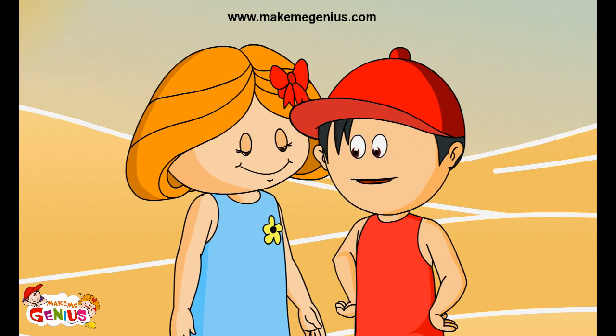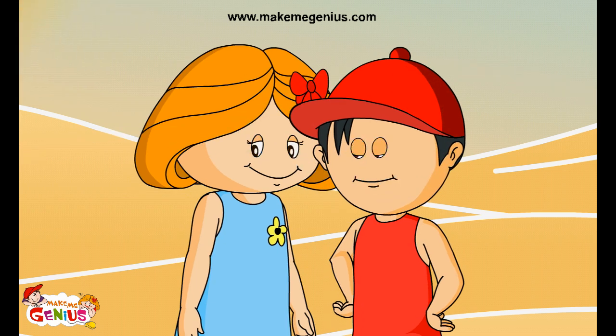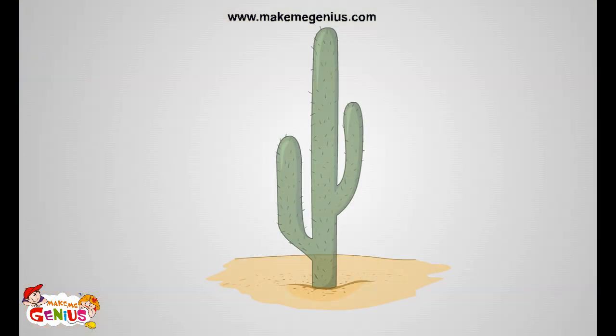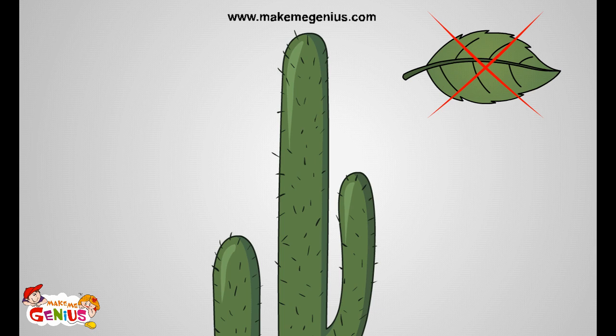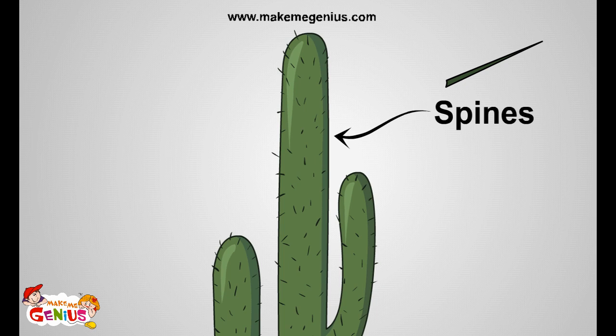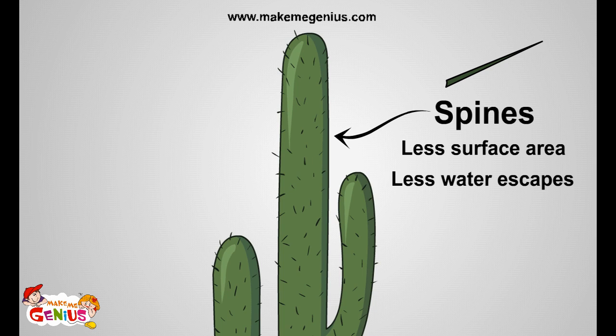But you did not answer my question — why does the cactus have no leaves? You answered your question yourself. Cactus don't have leaves because the cactus has to survive in a very dry and hot environment. Leaves have bigger surfaces, like water in the bowl, so cactus can lose more water through evaporation. So in place of leaves, cactus have spines. Spines reduce the surface area, so less water is lost.